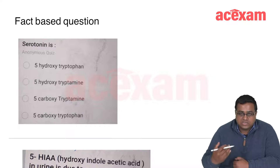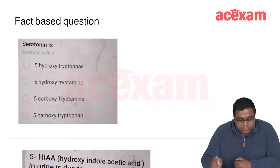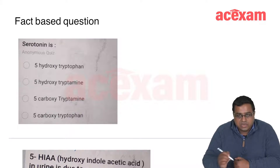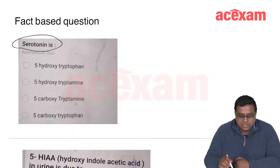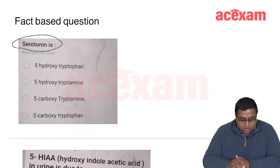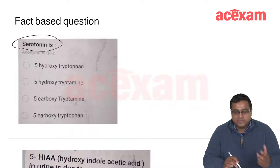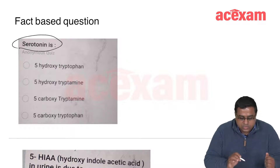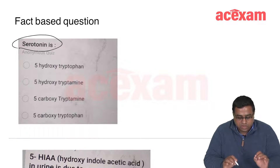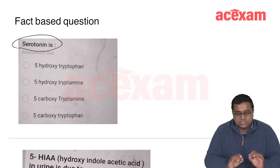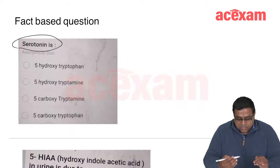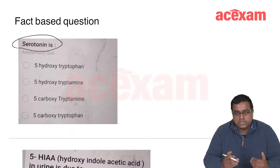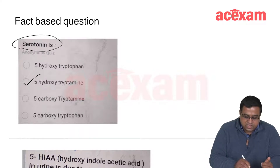Another fact-based question asks for the chemical name of serotonin. The choices — 5-hydroxytryptophan, 5-hydroxytryptamine, 5-carboxytryptamine, and 5-carboxytryptophan — all sound similar, making guessing very difficult. The key fact is that serotonin is an amine derivative of tryptophan. So the answer is 5-hydroxytryptamine.